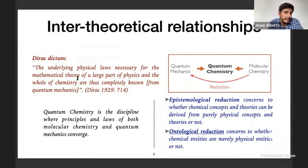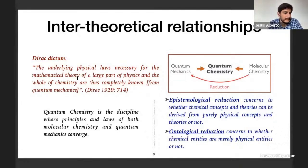One of the most important problems in the philosophy of chemistry is the problem of reduction. This idea arises from the relatively successful application of quantum theory to the study of chemical systems and crystallizes with Dirac's well-known dictum, which states that the underlying physical laws necessary for the mathematical theory of a large part of physics and the whole of chemistry are those completely known from quantum mechanics. However, the exact application of quantum mechanics to the study of chemical systems is not possible, and it is necessary to introduce approximations and idealizations that are not at all innocent and that have cast doubt on the viability of said reduction.